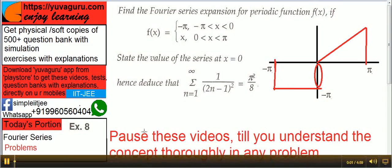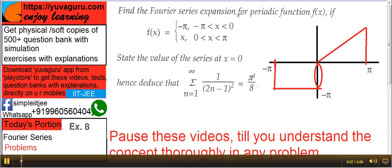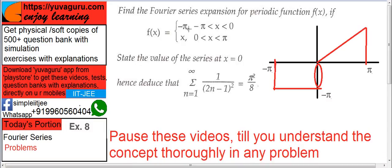Hi friends, let's solve problem number 8 on Fourier series. Find a Fourier series expansion for the periodic function f(x) if f(x) is given as: there are two ranges given, minus pi to 0 and 0 to pi.